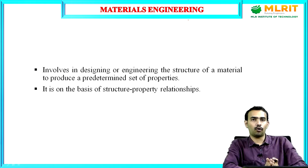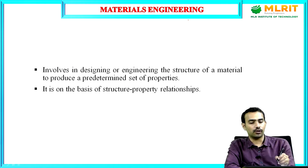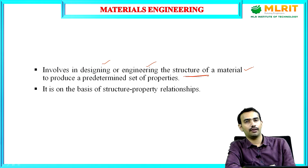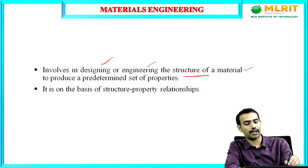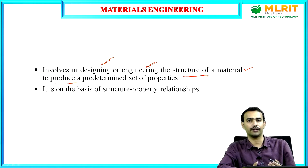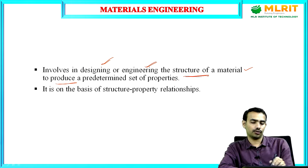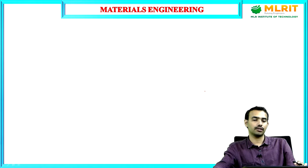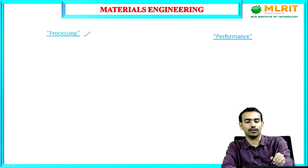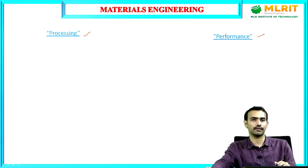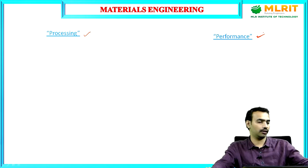Let us understand what materials engineering deals with. It involves designing and engineering of any structure based on materials in order to produce a pre-determined, desired set of properties. This is again engineering on the basis of structure-property relationships. It involves two terminologies: processing and performance — how do you process these materials to get your desired set of properties, and what are your desired set of properties?